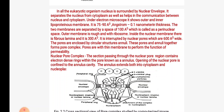Pores are with thin membrane to perform the function of permeability. The section passing through the nuclear pore region contains electron-dense rings within the pore, called as annulus. The opening of the nuclear pore is the annulus cavity. The annulus extends both into cytoplasm and nucleoplasm. The cross-section view of the pore complex shows peripheral ring, nuclear envelope, nucleoplasm, spoke, central plug, and cytoplasmic particles.